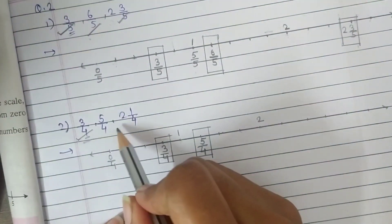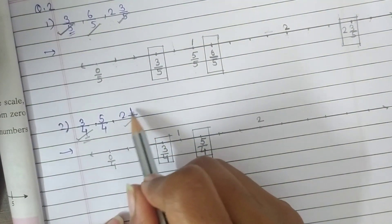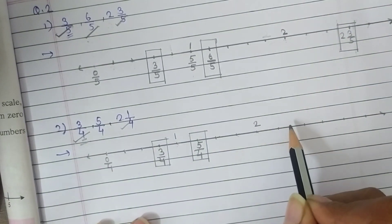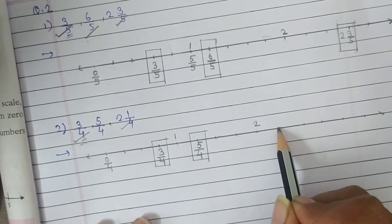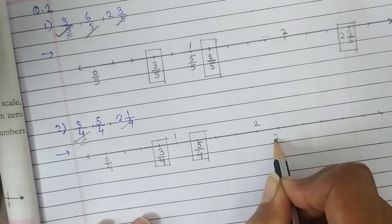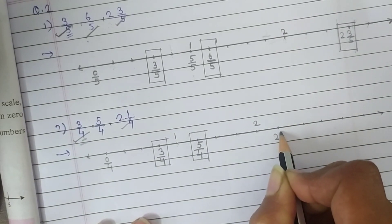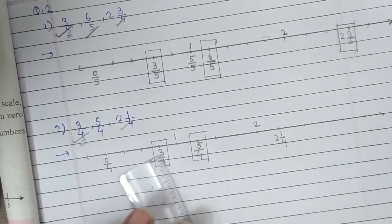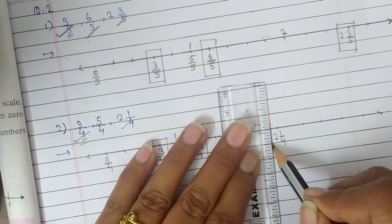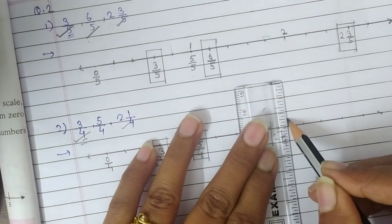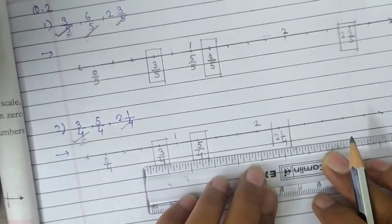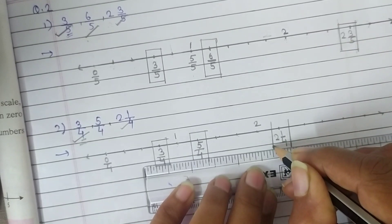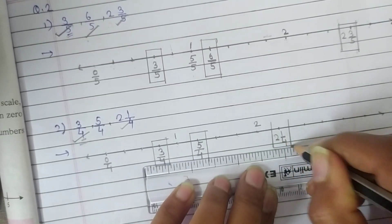The next fraction they told us to show is 2 and 1 upon 4. Here is 2, and just count 1 — here is 1, so this part indicates fraction 2 and 1 upon 4. Make a box for it. It's easy to show fractions on a number line — you just have to practice it very well.